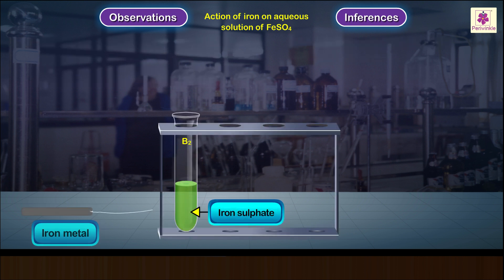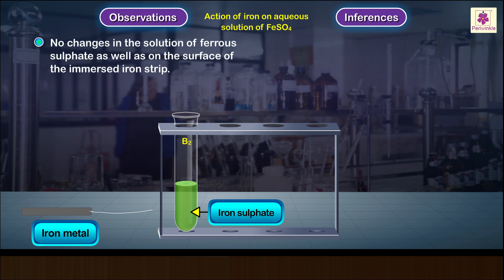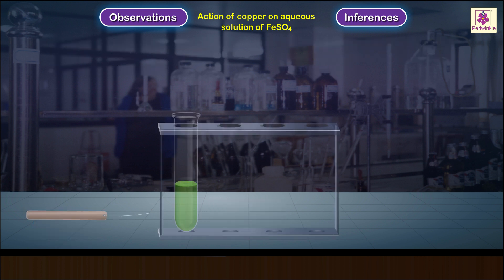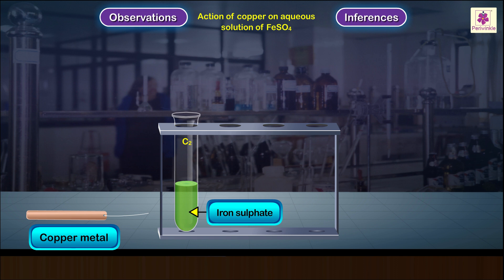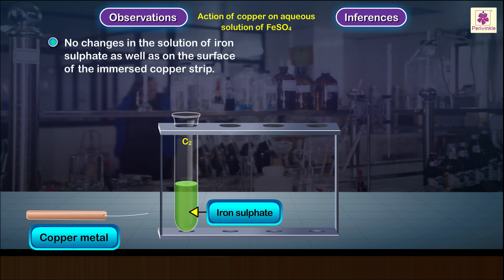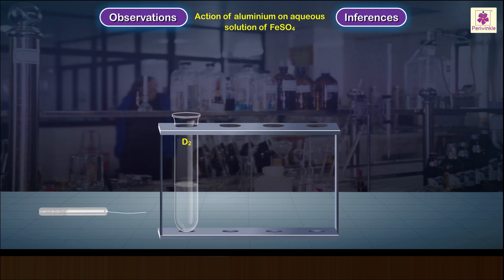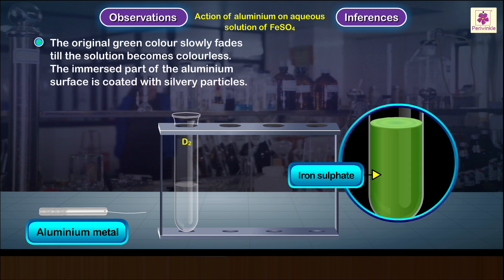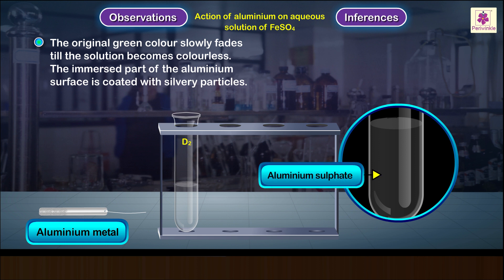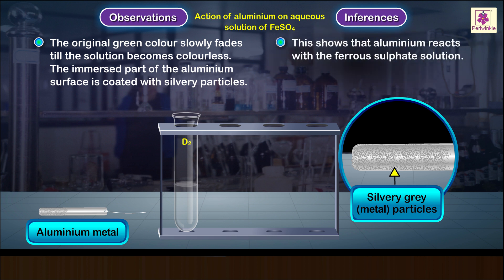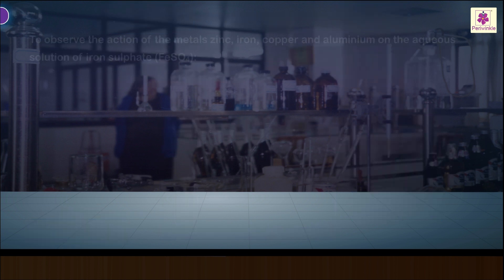Test tube B2 containing iron metal: no changes in the solution of ferrous sulfate, and no changes on the surface of the immersed iron strip. This shows that there is no reaction between iron metal and the iron sulfate solution. Test tube D2 containing aluminum metal: the original green color slowly fades until the solution becomes colorless. The immersed part of the aluminum surface is coated with silvery particles. This shows that aluminum reacts with the ferrous sulfate solution. Conclusions A2 noted.